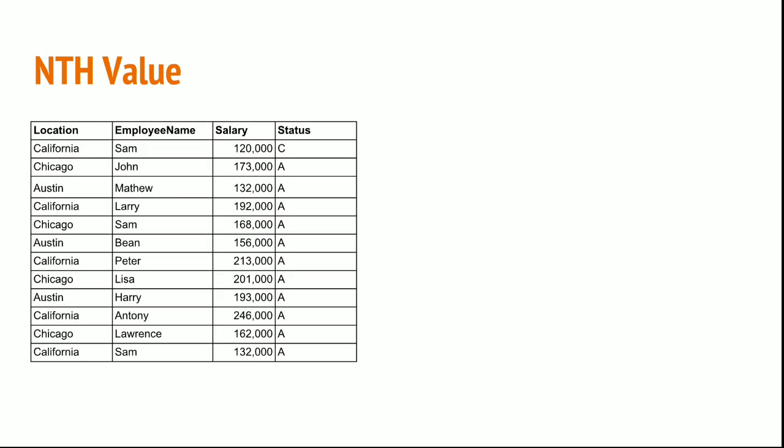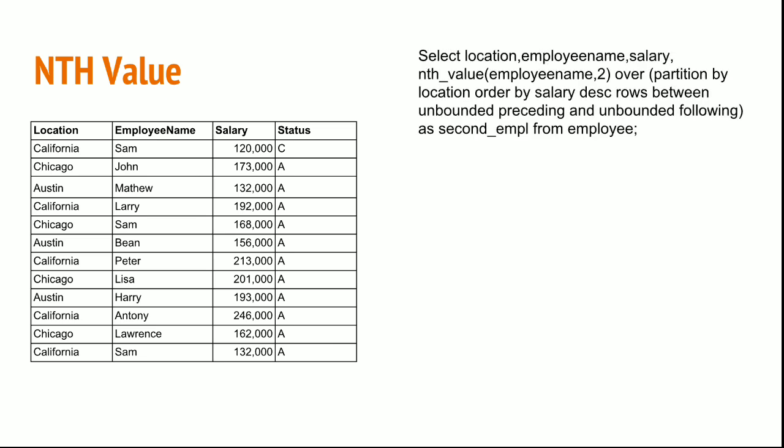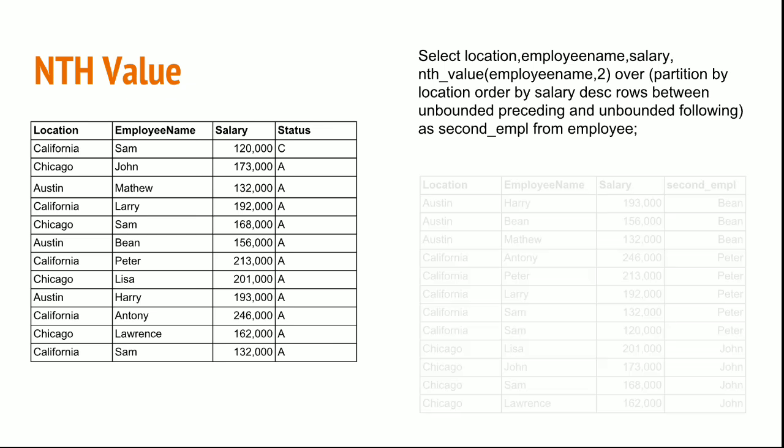The nth value function gives a value from a given dataset or group. Suppose I want to see the third highest employee from each location, I can use nth value. The syntax is: SELECT location, employee_name, salary, NTH_VALUE(employee_name, 2) OVER (PARTITION BY location ORDER BY salary DESC ROWS BETWEEN UNBOUNDED PRECEDING AND UNBOUNDED FOLLOWING) AS second_employee FROM employee. This gives the second employee for each location in this table.